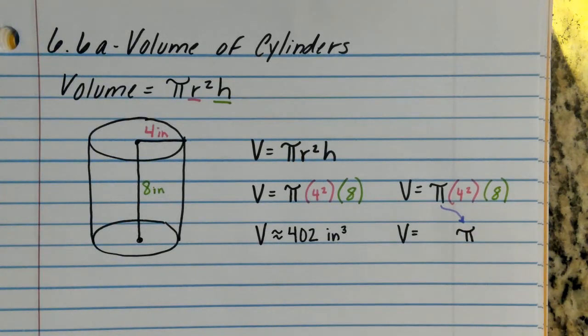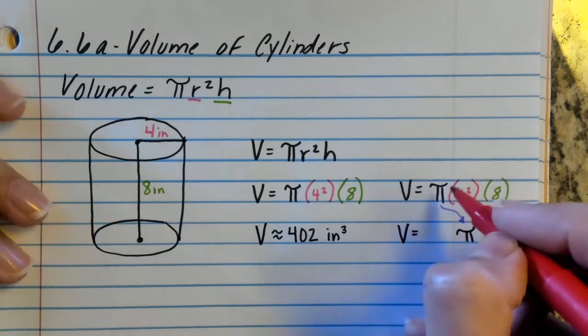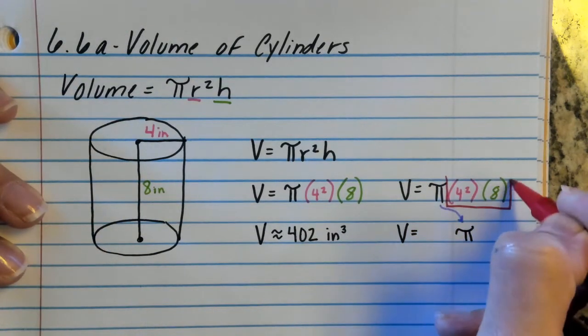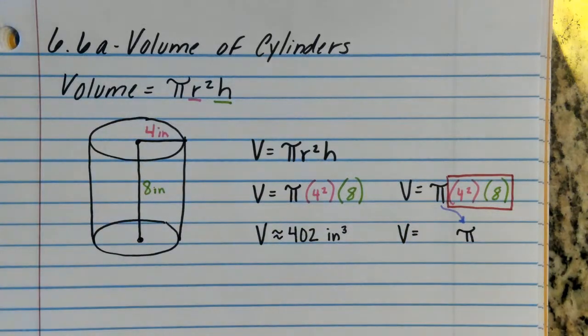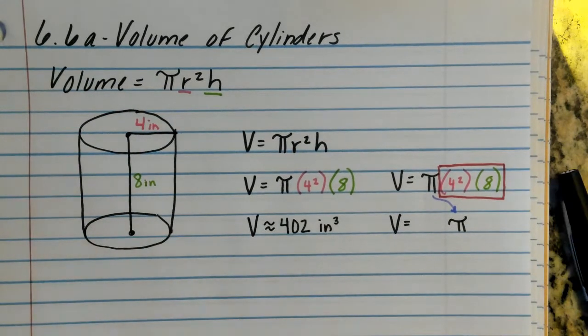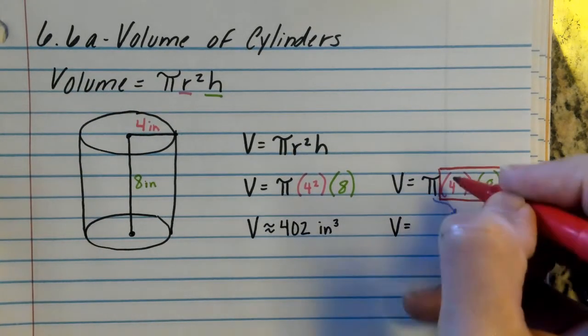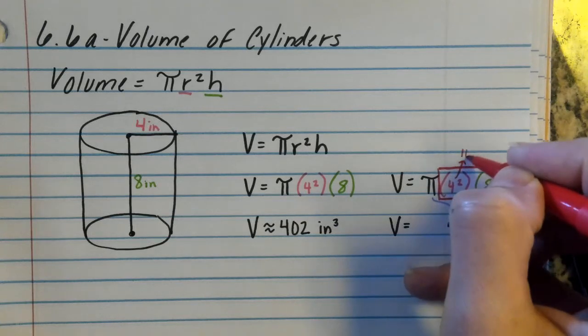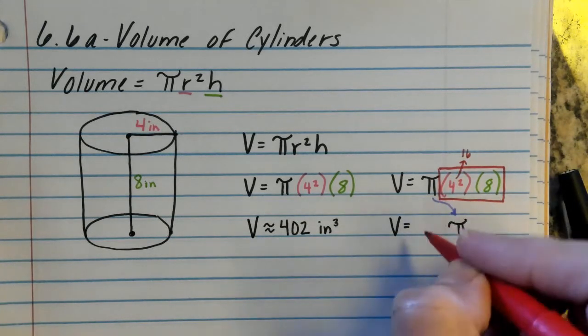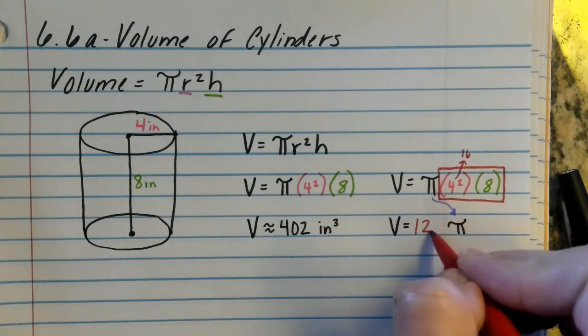What you're going to do is take this section right here and plug all of this into the calculator. So you get four squared, which is 16, and then your 16 times 8. So this comes out to 16, and 16 times 8 is going to give you 128.